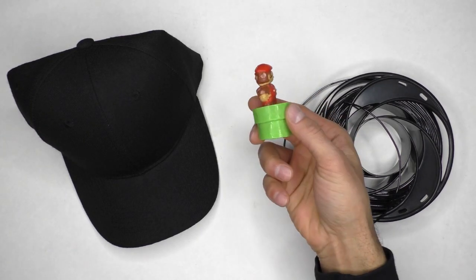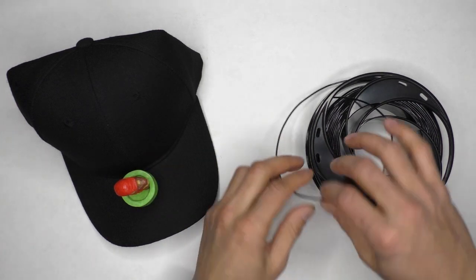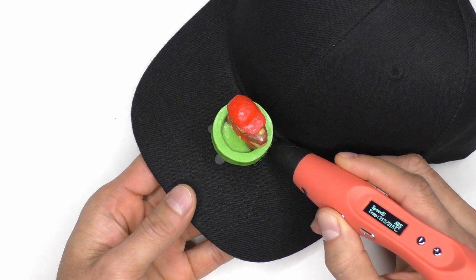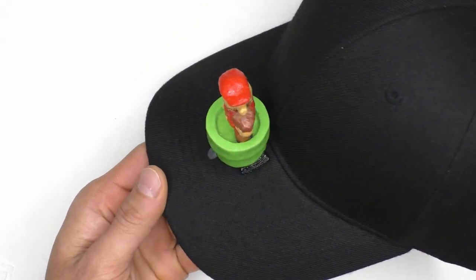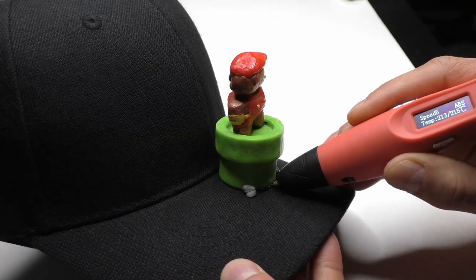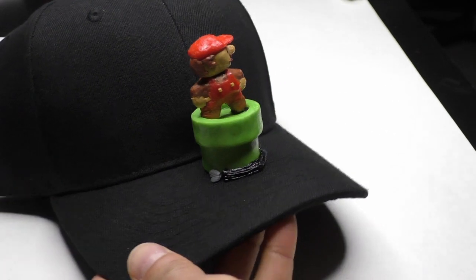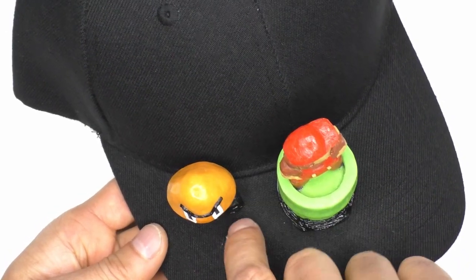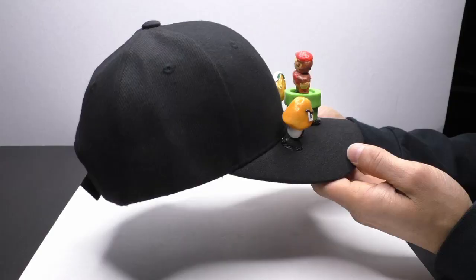Alright, now for the 3D pen and fabric fun. So we're going to take these figures and use flexible black filament to attach them directly to the hat. In my main 3D pen and fabric video, I talk about the details of why we have to use flexible filament. So if you want to know, go check that video out. I use tack adhesive putty to hold the pipe in place as I work around the perimeter adding flexible filament. And then just repeat this process for the Goomba and Koopa Troopa. And we're done.